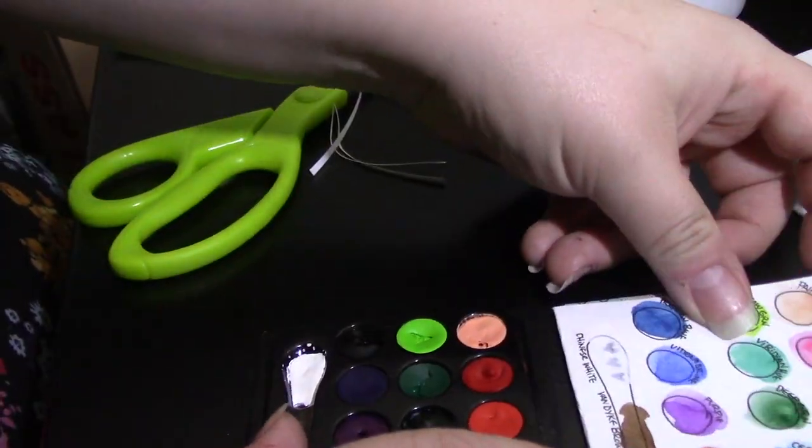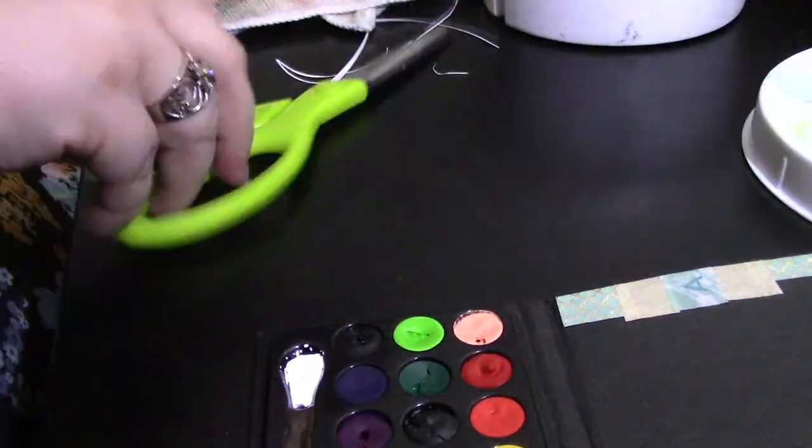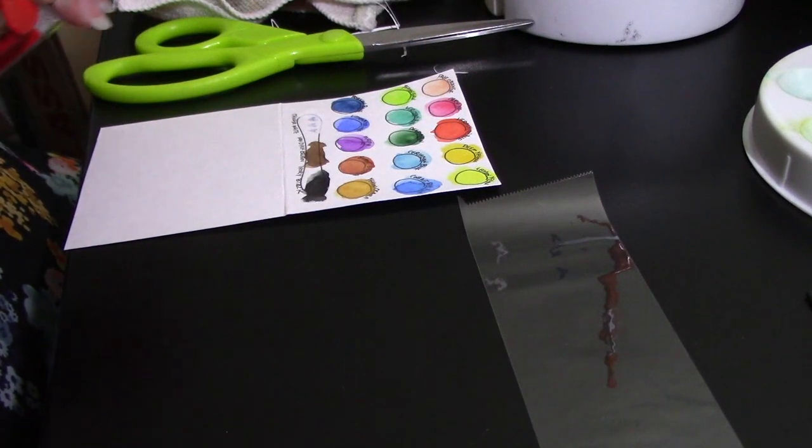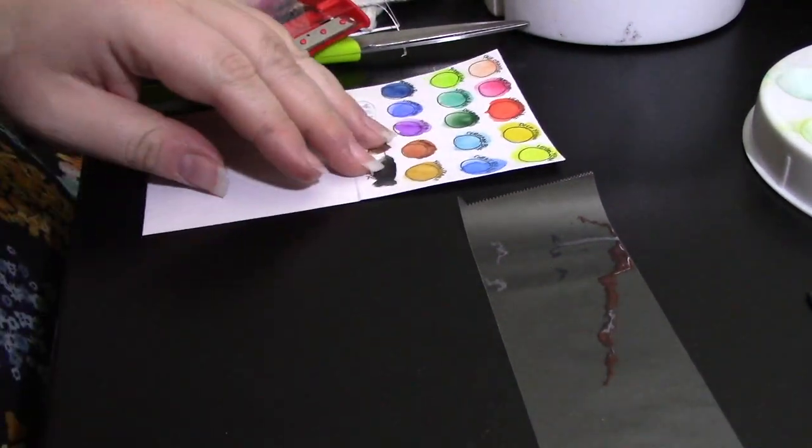In order to create a waterproof surface for us to mix on, and so that the swatches stay protected, we're going to laminate our card. I don't have a laminator, so I just use packing tape, which can also be obtained at the dollar store.